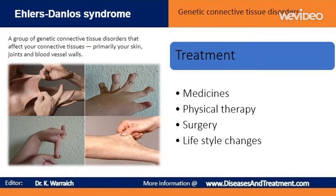If you have Ehlers-Danlos syndrome, it's important to prevent injuries. Choose sports wisely: walking, swimming, tai chi, recreational biking, using an elliptical machine or a stationary bike are all good choices. Avoid contact sports, weight lifting, and other activities that increase your risk of injury. Minimize stress on your hips, knees, and ankles. Rest your jaw: to protect your jaw joint, avoid chewing gum, hard rolls, and ice.